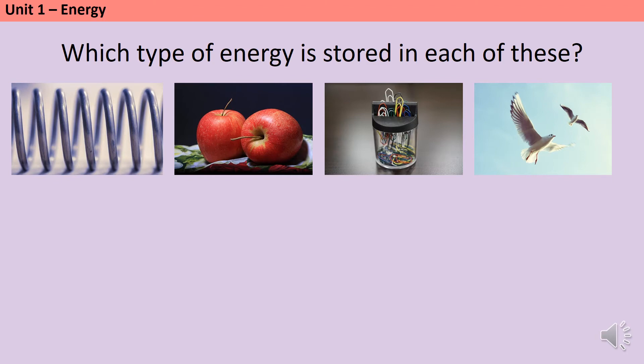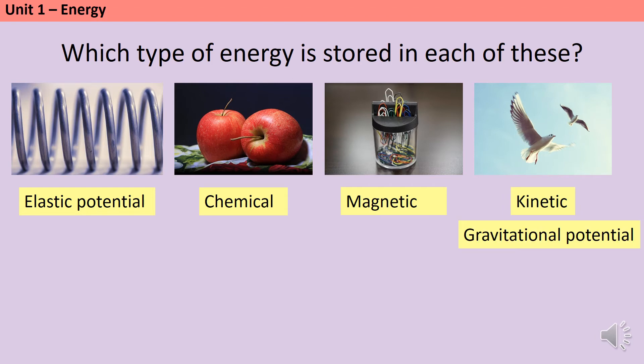The spring is an example of an elastic potential store, because it's able to deform and then resume its original shape. Apples are a food, so they're a store of chemical energy. The paperclip holder is working with magnets, so of course it's a magnetic store. And then the birds that are flying in the air are a store of kinetic energy because they're moving, but also because they're raised up, they have gravitational potential energy too.